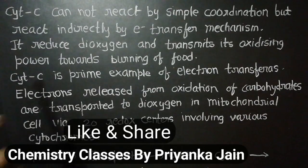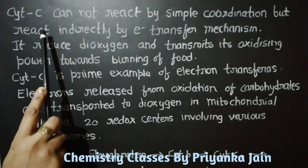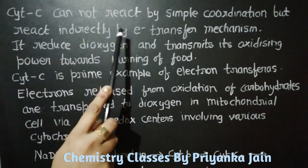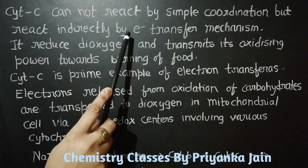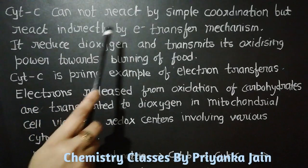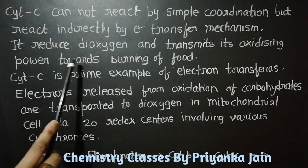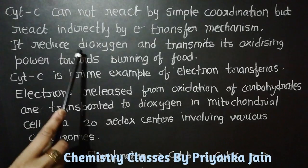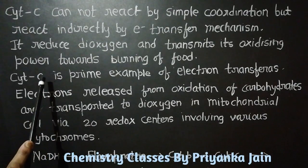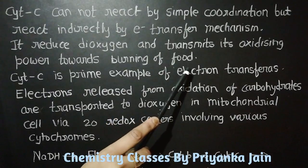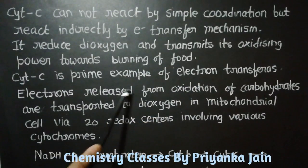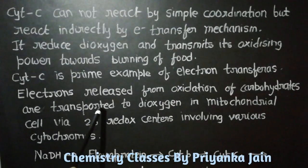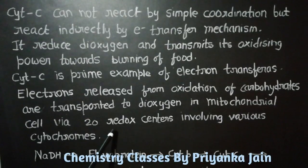Since cytochrome c cannot react by simple coordination, it reacts indirectly through an electron transfer mechanism. It reduces dioxygen and transmits its oxidizing power toward the burning of food. This is the prime function of cytochrome c, making it a prime example of an electron transferase. Electrons released from the oxidation of carbohydrates are transported to dioxygen in the mitochondrial cell via 20 redox centers involving various cytochromes.